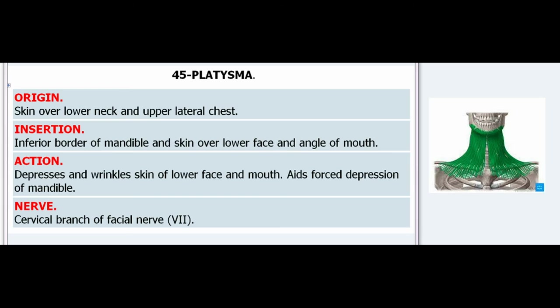45. Platysma. Origin: Skin over lower neck and upper lateral chest. Insertion: Inferior border of mandible and skin over lower face and angle of mouth. Action: Depresses and wrinkles skin of lower face and mouth, aids forced depression of mandible. Nerve: Cervical branch of facial nerve (VII).